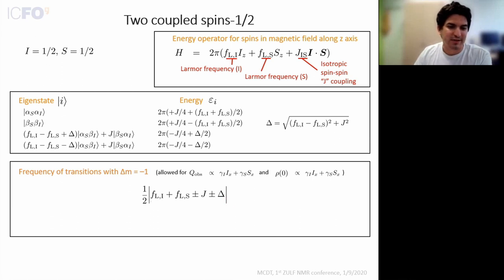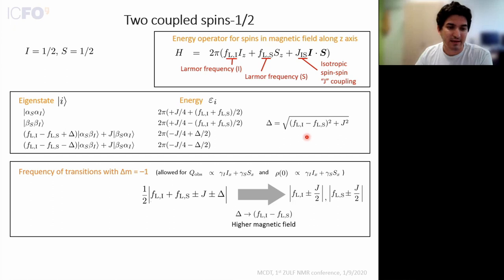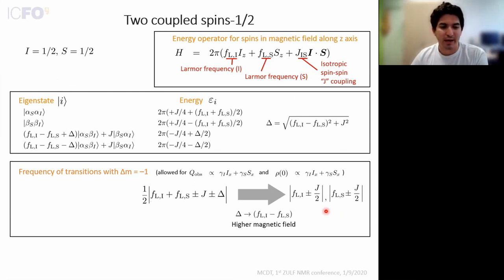We can look at two limiting scenarios. In high magnetic fields, where the Larmor frequency difference is much larger than the J coupling, delta tends to the first part, and we recover transition frequencies which are the Larmor frequencies of the individual spins plus or minus J coupling. So for a weakly coupled pair of spins-half in a high magnetic field, you see a spectrum with two doublets — we know that.